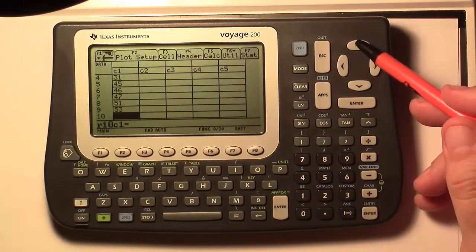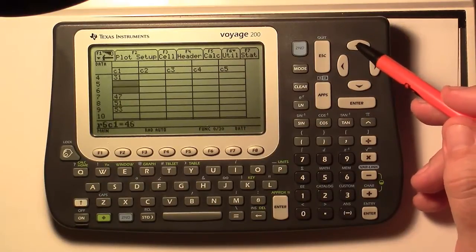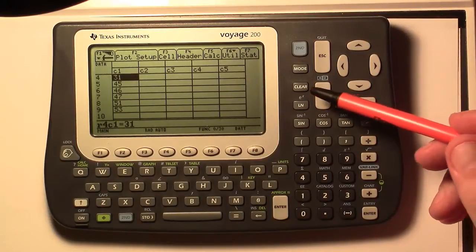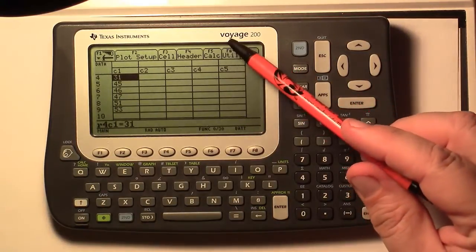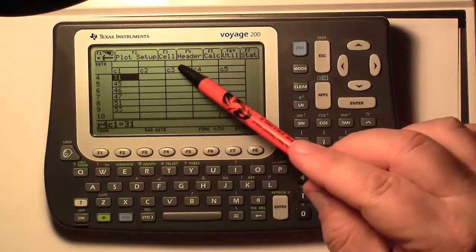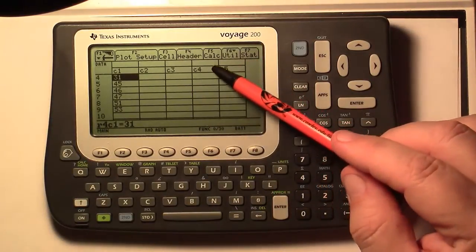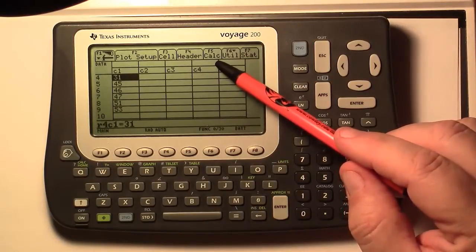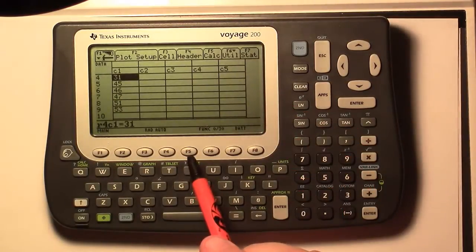If you're in your stats course, you probably want to go back up here and up arrow and verify all your numbers. Now once you're satisfied with those, across the top here, you see you've got cell, header, calc, a bunch of other stuff. Calc is the one we want. And you see it says F5. So we'll come down here. We'll push the F5.